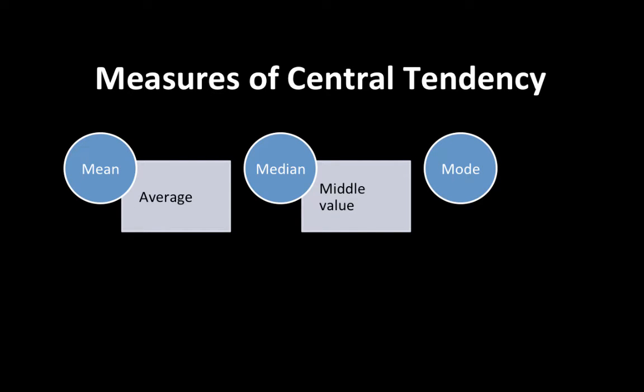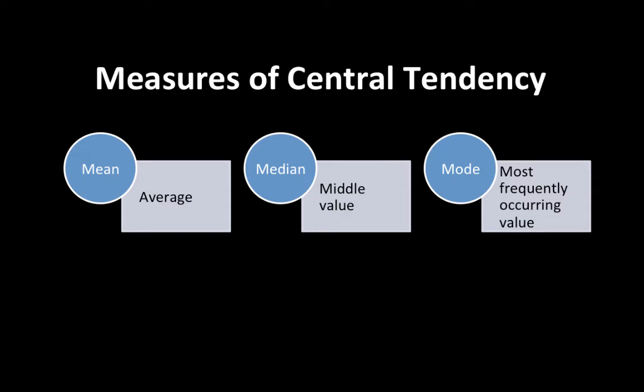A third measure is the mode — of all the items, the one that occurs most frequently might be the most representative. It depends on the purpose for which you are using the measure of central tendency. There is nothing to say one is more valid than the other; it all depends on the purpose.